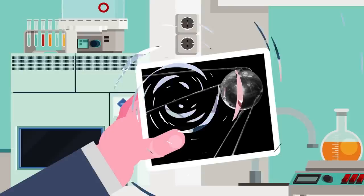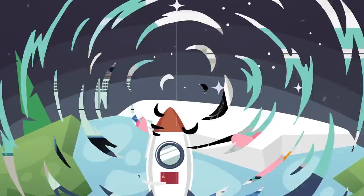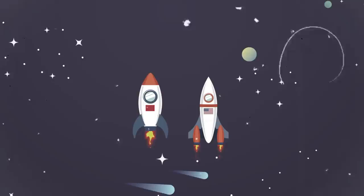The Soviets launch Sputnik 1, the first satellite to go into space on October 4th. It can be heard on radios around the world. The United States is losing the space race, Professor, and we need to do something big to assert our dominance.